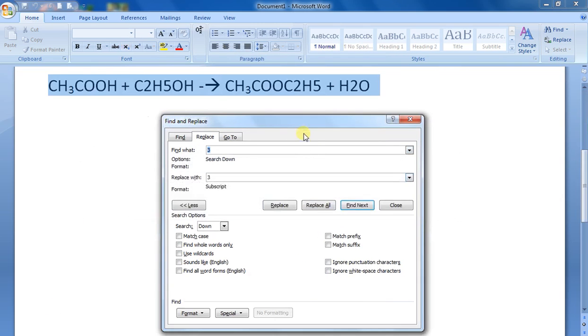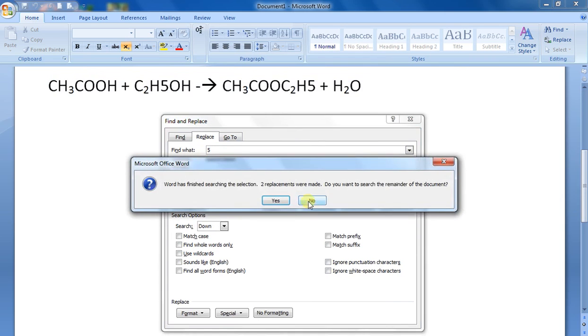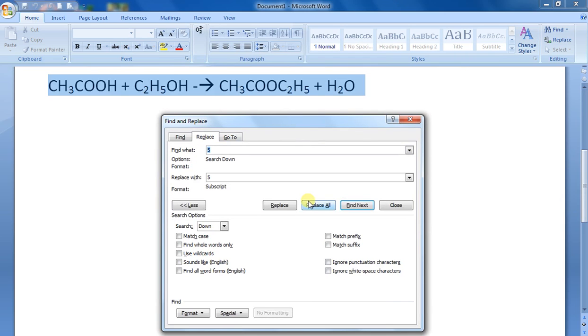Click No, and you get all those numbers as subscripts. Then find 2, replace it with formatted 2, Replace All. Then whatever number is there, like 5, replace it with 5 as superscript, Replace All. That's it, you've got it.